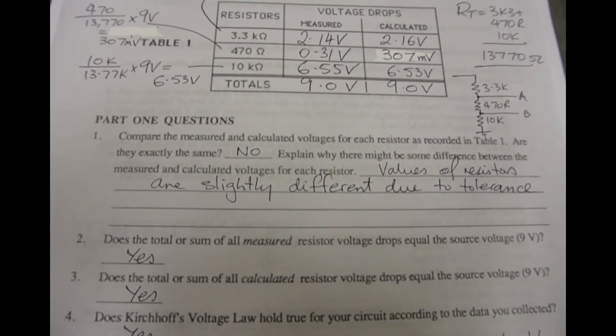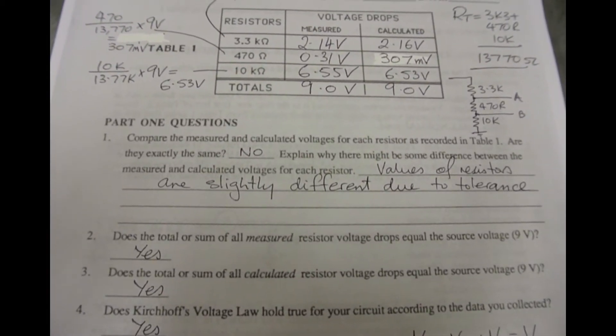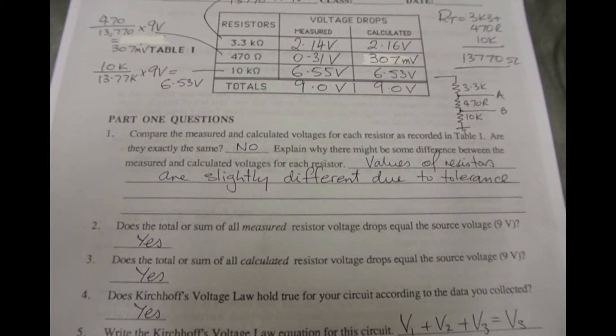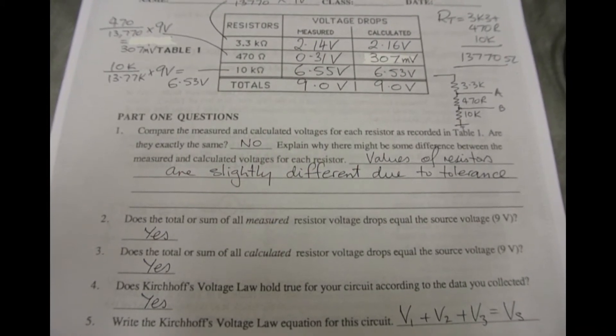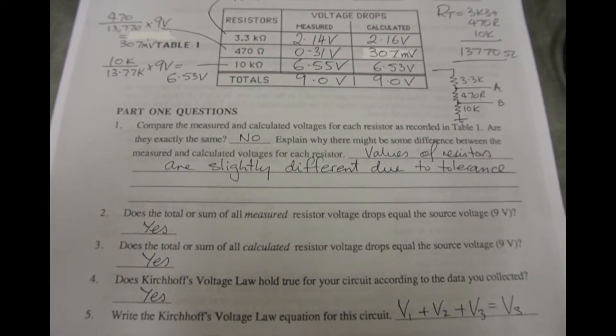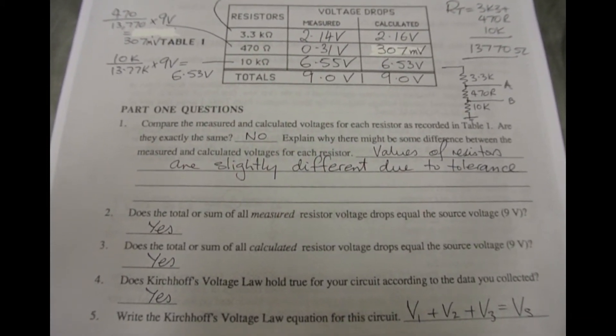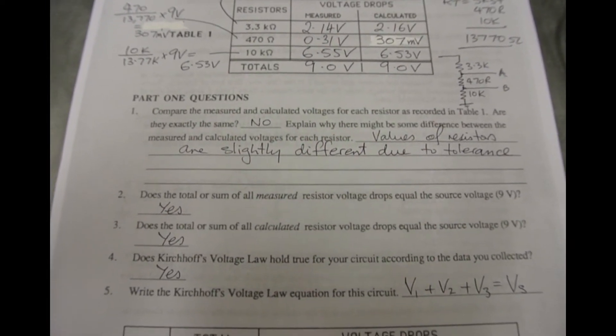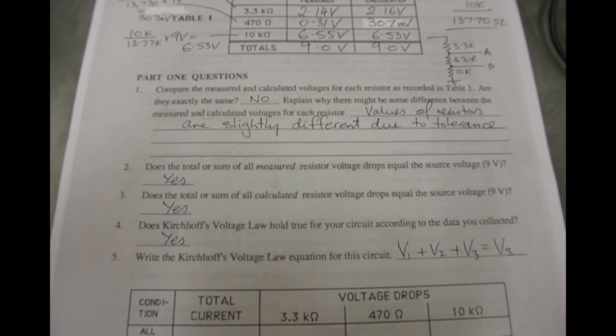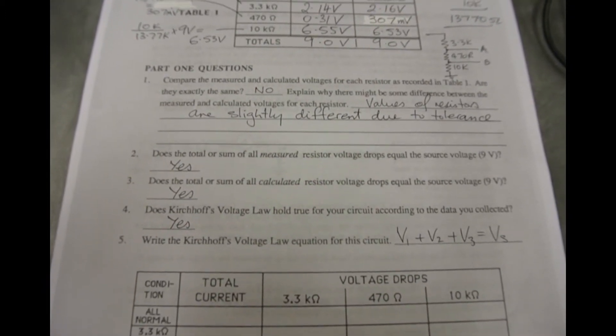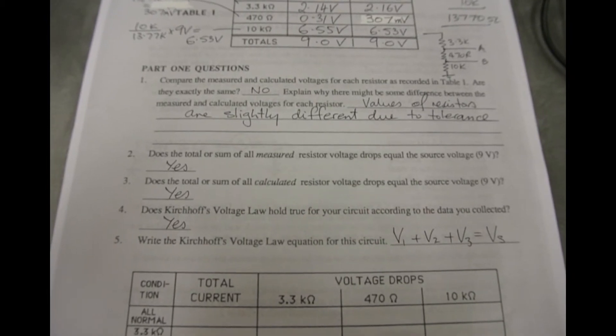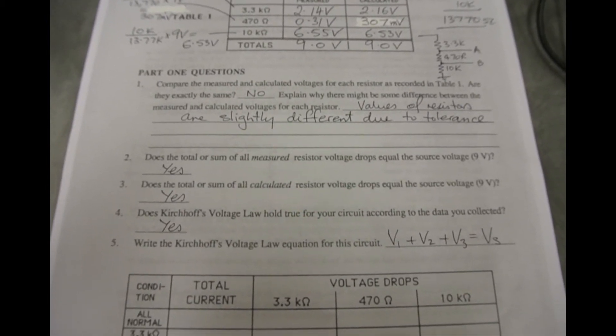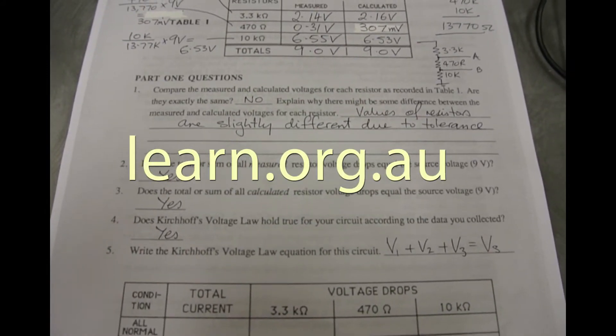There were some questions asked on the sheet, and I've gone ahead and answered all of those questions. We did notice there were some slight variations in the resistor voltages compared to the theoretical voltages we calculated, due to the individual tolerances of the different resistors. But Kirchhoff's law has been proven to hold true. That is, the sum of the voltage drops in this circuit do add up to the supplied voltage VS.